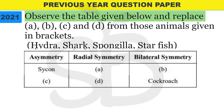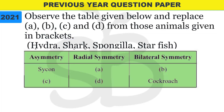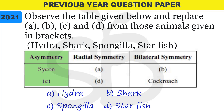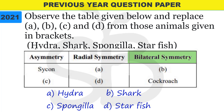Next question from 2021: observe the table and replace A, B, C, D from the animals given in brackets. The question involves symmetry types. Radial symmetry examples include Hydra and Starfish - each radial plane divides them into two equal halves. Bilateral symmetry - for example, Shark - is also divided into two equal halves. This is a very easy question.